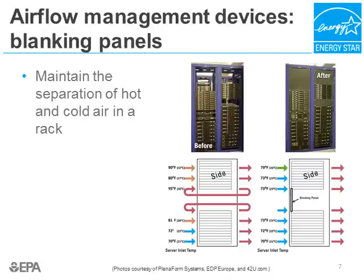There is often unused rack space with no servers mounted in server racks. These openings basically jeopardize the hot aisle/cold aisle configuration because they allow hot air to mix back into the cold aisle. One of the simplest, cheapest, and most effective airflow management strategies involves the use of blanking panels — thin plastic panels that seal up the unused spaces in server racks. A single blanking panel can improve a server rack's energy efficiency by one to two percent, and more if multiple blanking panels are used, as shown in the illustration.